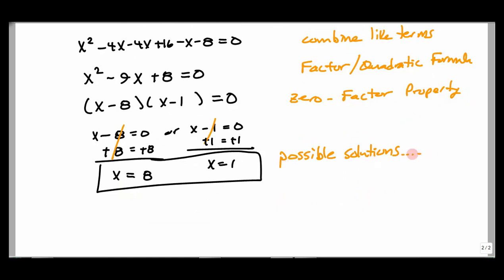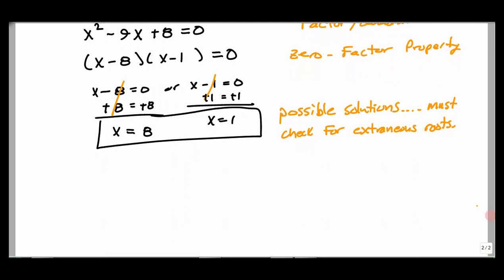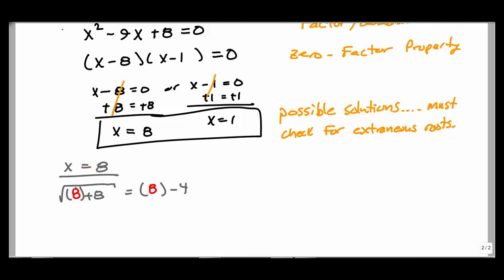We take these potential solutions and check for extraneous roots. Taking x = 8 and plugging back into the original √(x + 8) = x − 4: square root of (8 + 8) = square root of 16 = 4, and 8 − 4 = 4. So 4 = 4 — this checks. Therefore x = 8 is a solution.